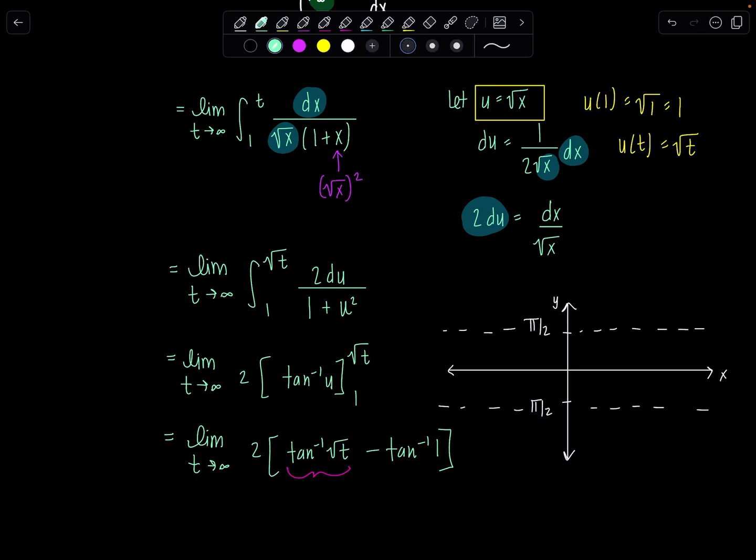Okay. So those are the horizontal asymptotes. Pi over 2, negative pi over 2. Let's not make it so wonky. Come on. There we go. Beautiful. There's tan inverse of x.